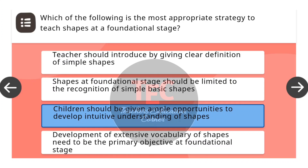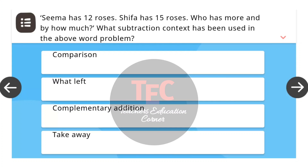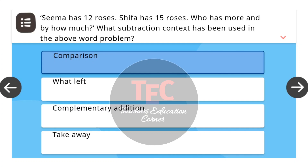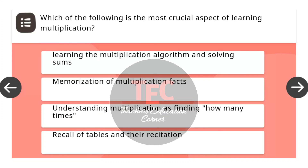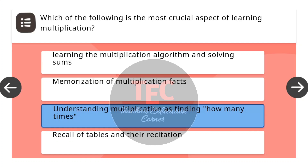Next question: Sima has 12 roses, Shifa has 15 roses. Who has more and by how much? Which subtraction context has been used in the above word problem? The correct answer is comparison. Next question: Which of the following is the most crucial aspect of learning multiplication? The correct answer is understanding multiplication as finding how many times.